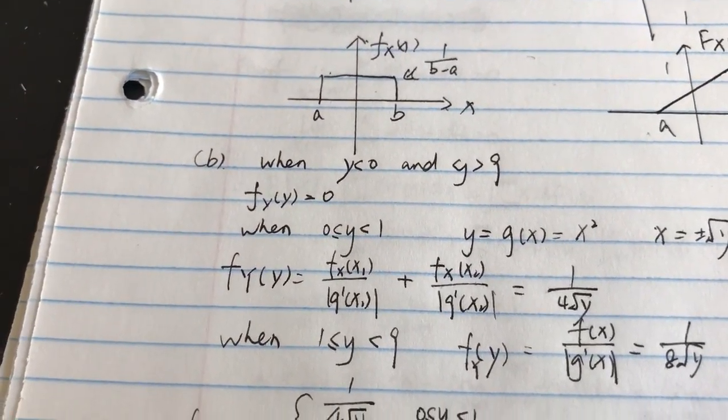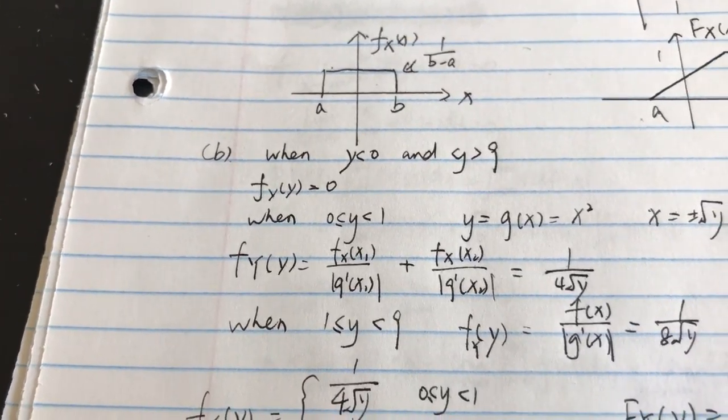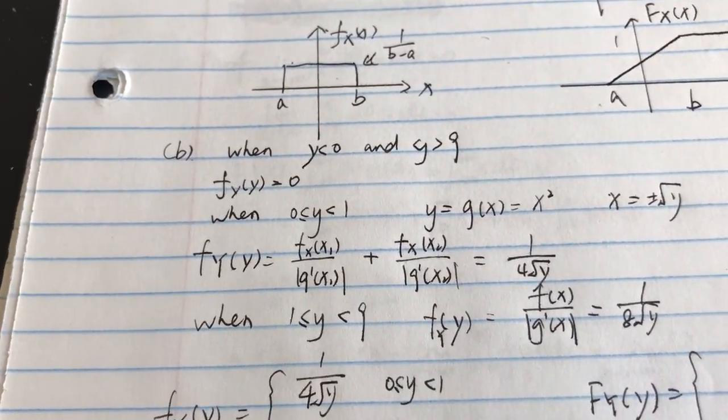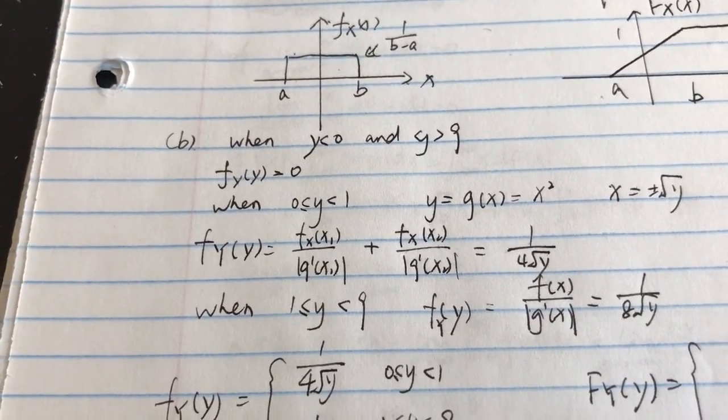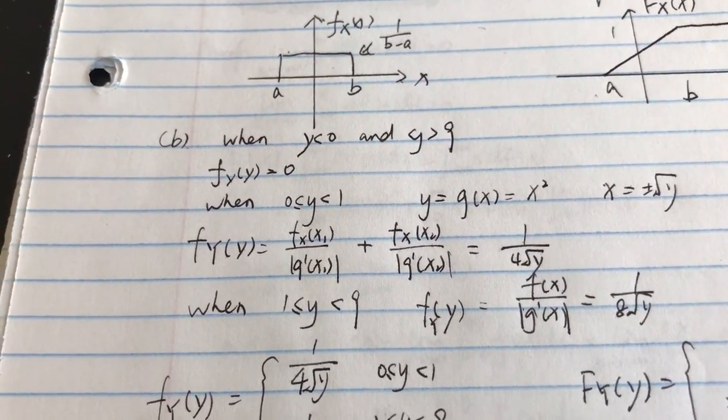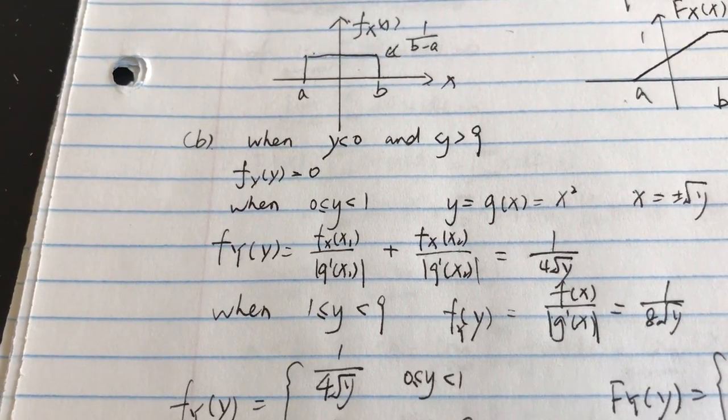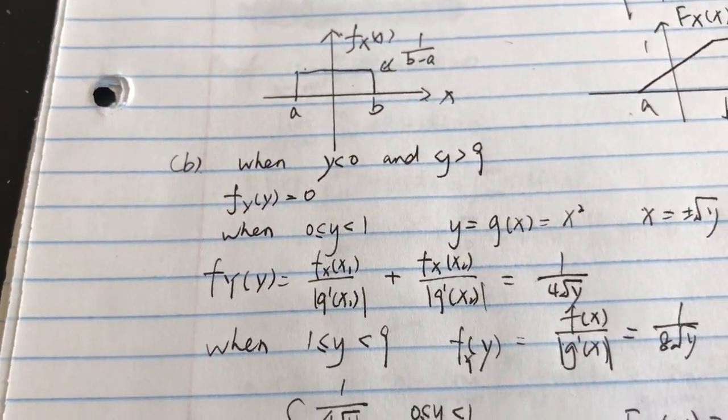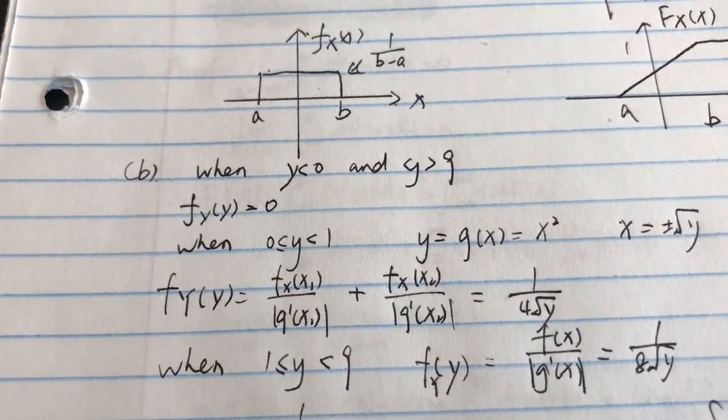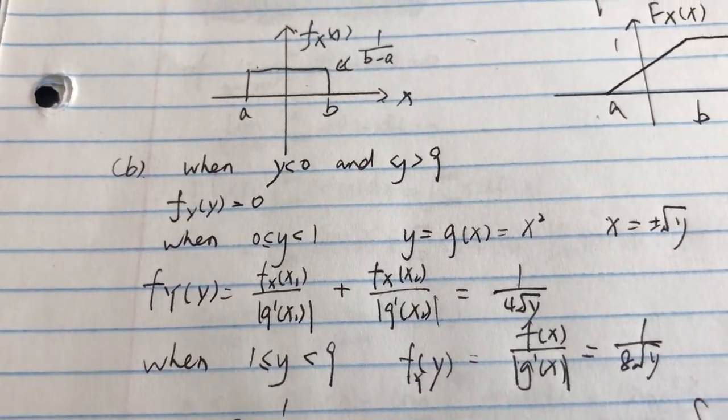First, when y is less than 0, and when y is more than 9, the density function of y is 0.